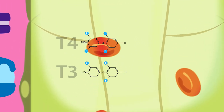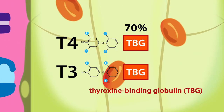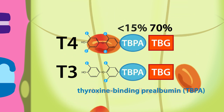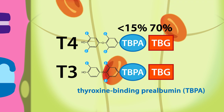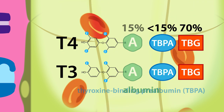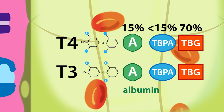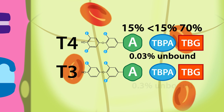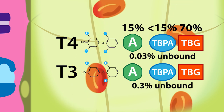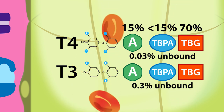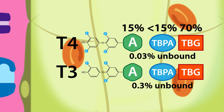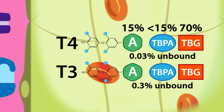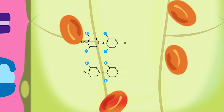Once secreted into the plasma, 70% of the T3 and T4 are bound to thyroxine-binding globulin, slightly less than 15% are bound to thyroxine-binding prealbumin, and 15% is bound to albumin. 0.03% of the T4 is unbound or free, while 0.3% of the T3 is unbound or free. Thyroxine-binding globulin is synthesized and secreted from the liver, and it buffers the thyroid hormone, helping normalize plasma concentration and prolong the half-lives of T3 and T4.